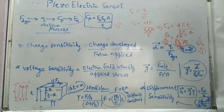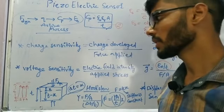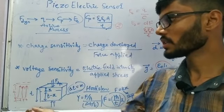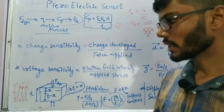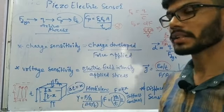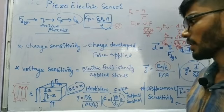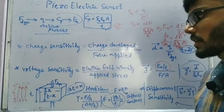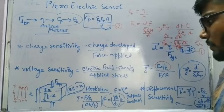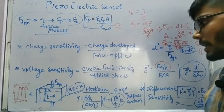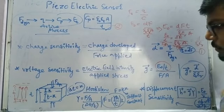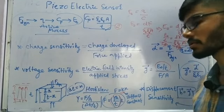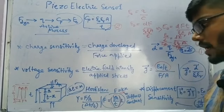The third formula is displacement sensitivity. When dynamic stress is applied to the crystal, it experiences compression, so the initial thickness T decreases by X to become T−X. Using Hooke's law, Young's modulus Y = (F/A) / (ΔT/T) = stress/strain. From this, force F = (YA/T)·X, and comparing with F = KX, the stiffness constant is K = YA/T.